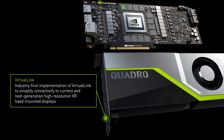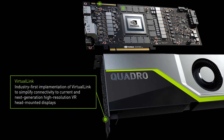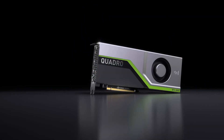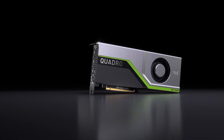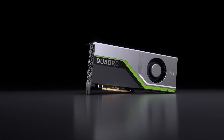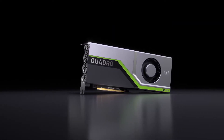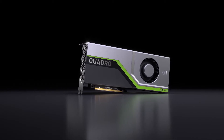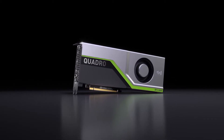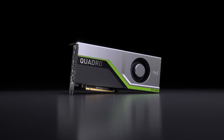The next board to be released will be the Quadro RTX 5000. This product features 3,072 CUDA cores, 384 Tensor cores, 16GB of GDDR6 GPU memory, and 6 giga rays per second with AI denoising, again delivering real-time ray tracing.